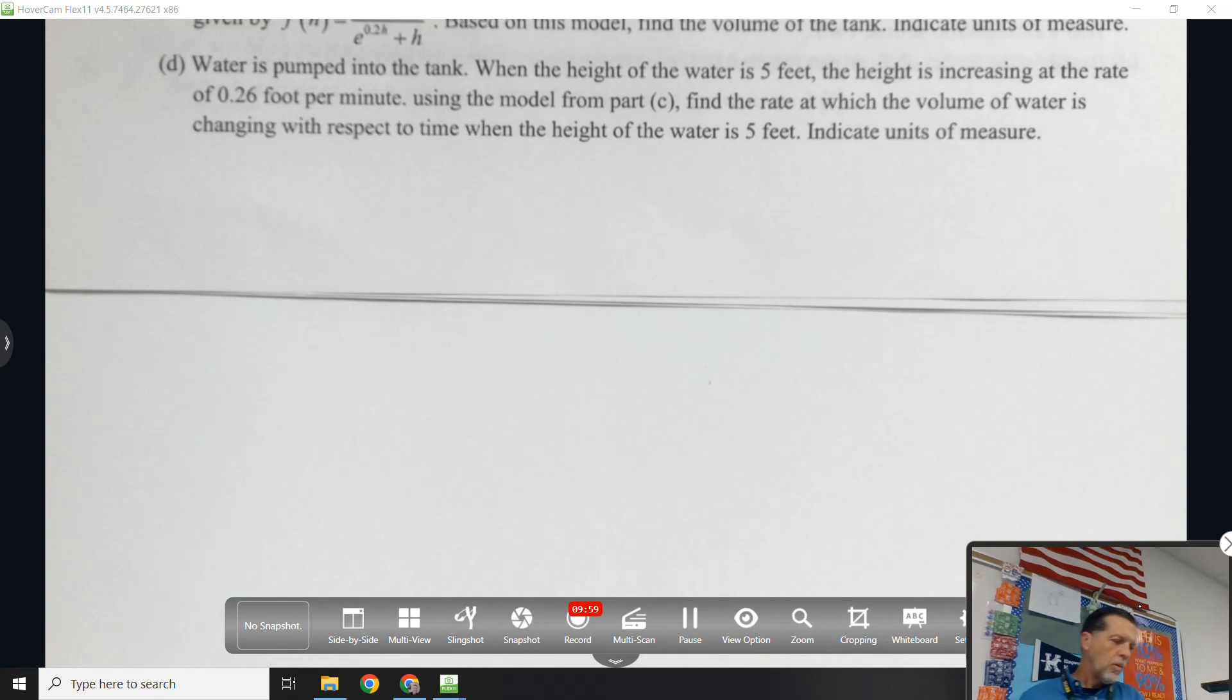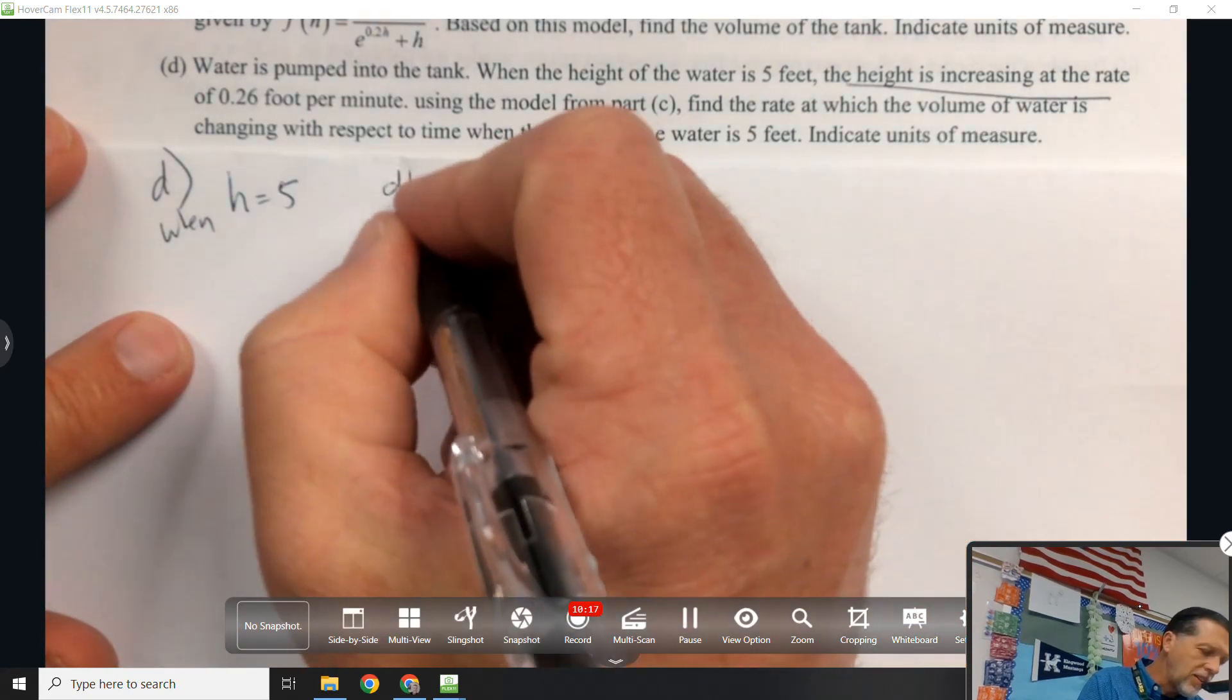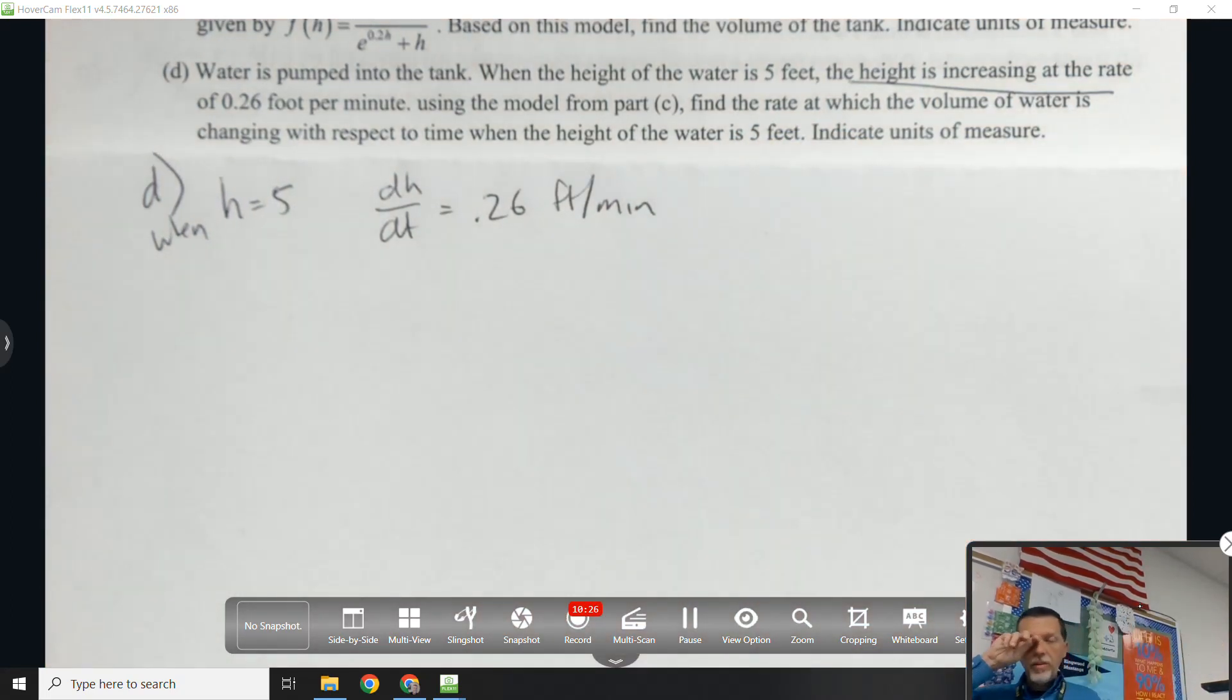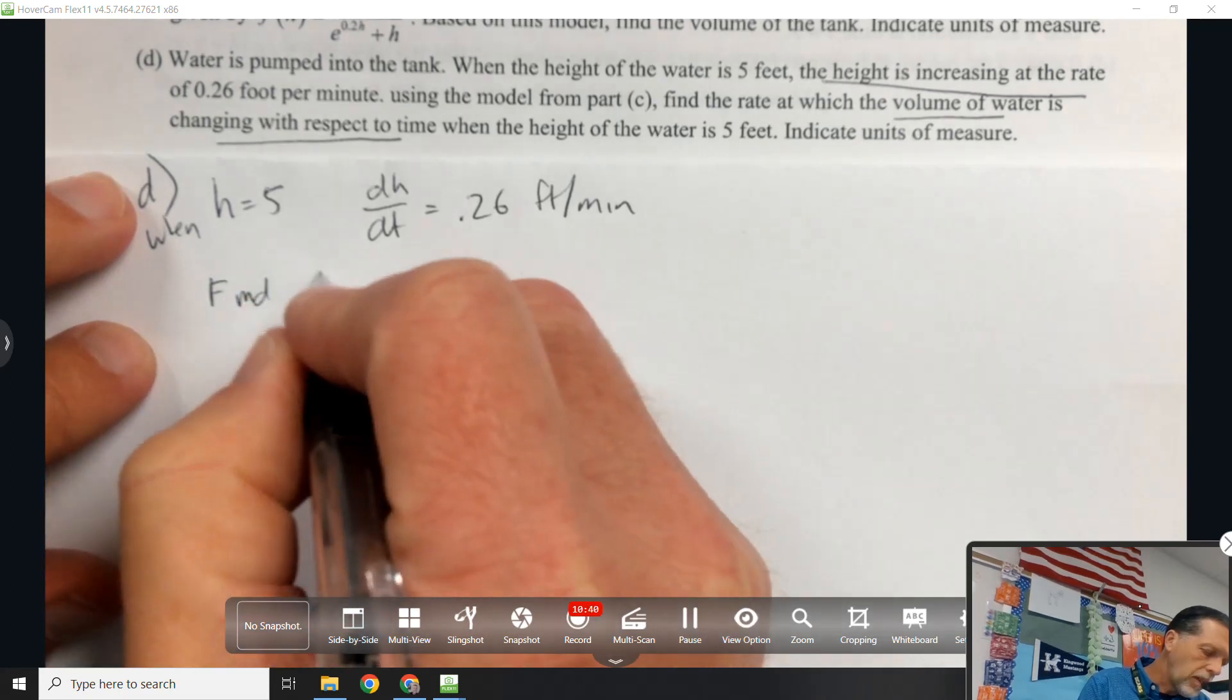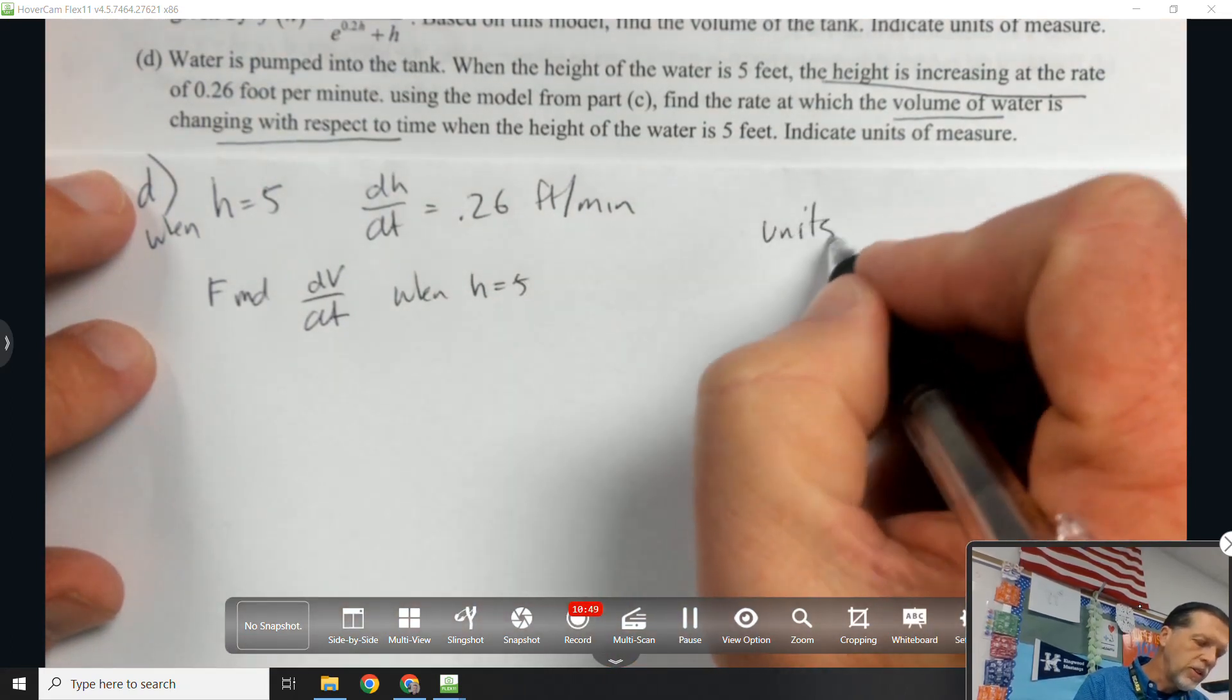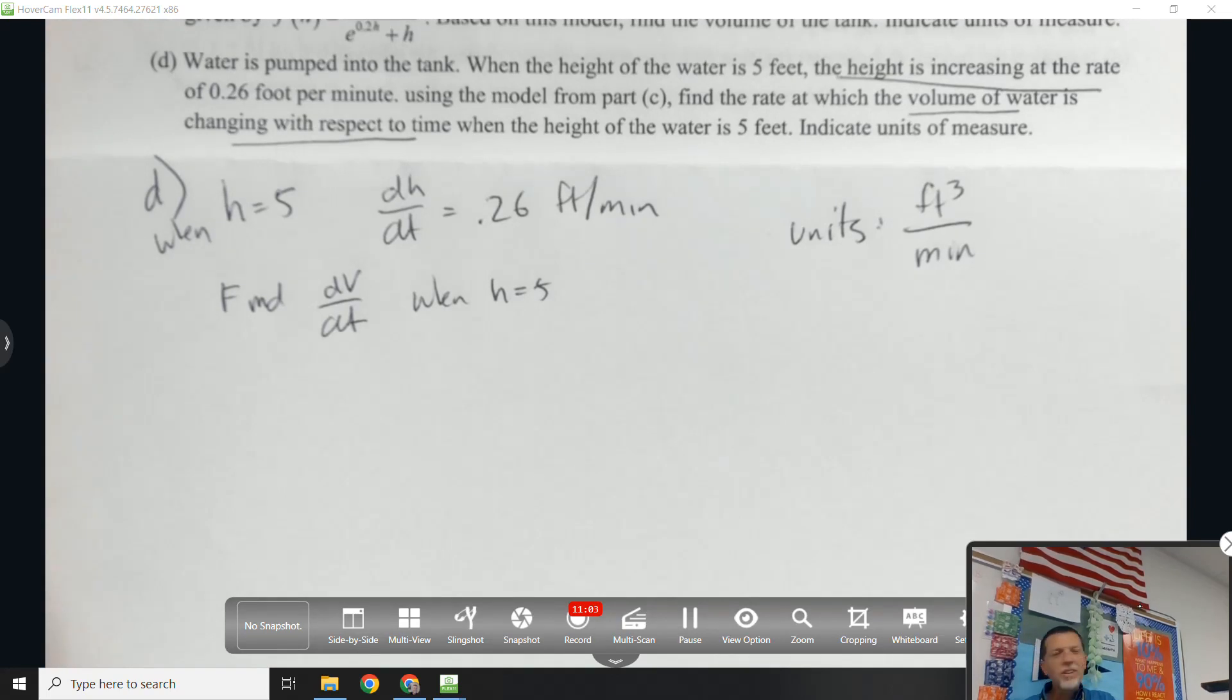Now answer D. Water is pumped into the tank. When the height of the water is 5 feet, the height is increasing at a rate. So when H equals 5, the height is increasing at a rate. So that's dh/dt. It's 0.26 feet per minute. Using the model from part C. Okay, so I'm glad I typed in Y1 already. Find the rate at which the volume of water is changing with respect to time. So find dV/dt when H is 5. Units of measure. You know, I can do units right now because dV over dt, dV is feet cubed and t is in minutes. So if they're kind enough to give me a point for the units, I'm going to go ahead and grab that point right now.